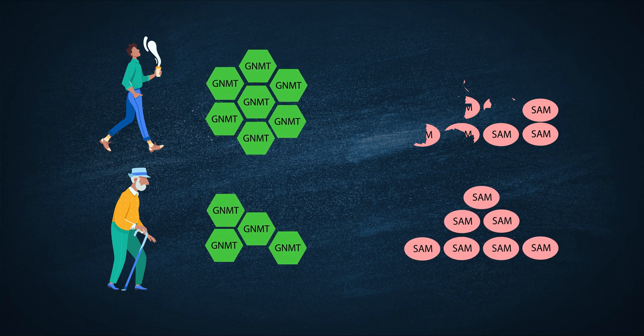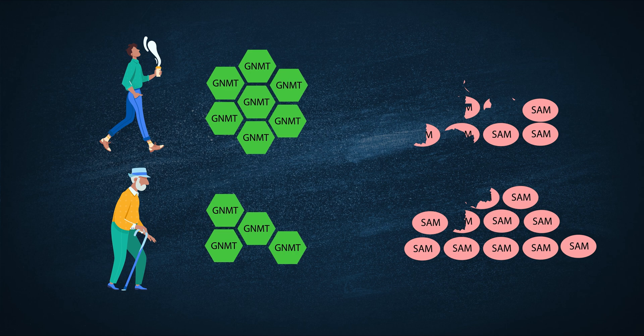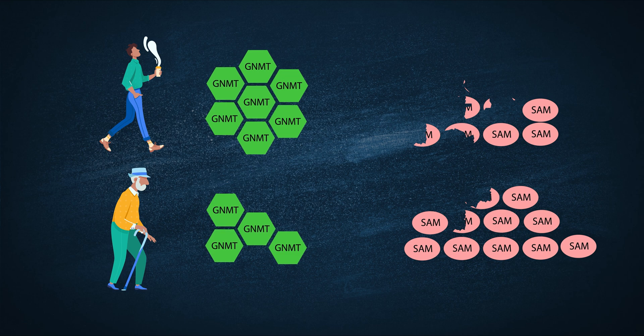And GNMT expression decreases, meaning that SAM starts to build up, despite us consuming roughly the same amount of methionine as we always did in our diet. As SAM accumulates in the cells, it chronically activates mTOR, leading to aging, diseases we associate with old age and a shorter lifespan overall.